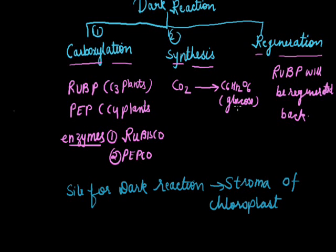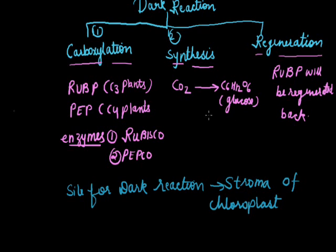To summarize the dark reaction: it consists of three steps — carboxylation, synthesis, and regeneration. In carboxylation, carbon dioxide acceptors like RUBP and PEP in C3 and C4 plants receive carbon dioxide in the presence of enzymes like Rubisco and PEPCO. In synthesis, the accepted carbon dioxide is assimilated into glucose, which is the main food for plants. In regeneration, RUBP — ribulose bisphosphate — is regenerated back. The full form of PEP is phosphoenolpyruvate.